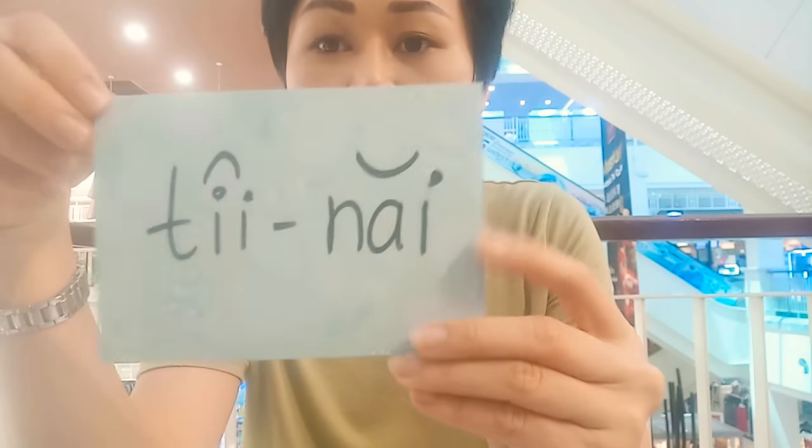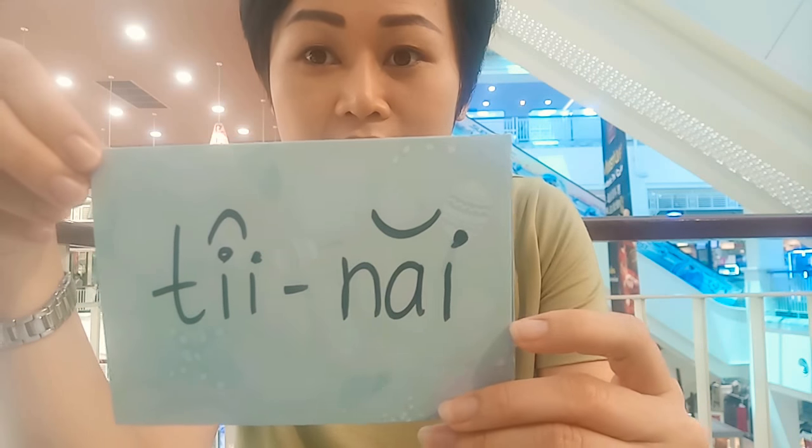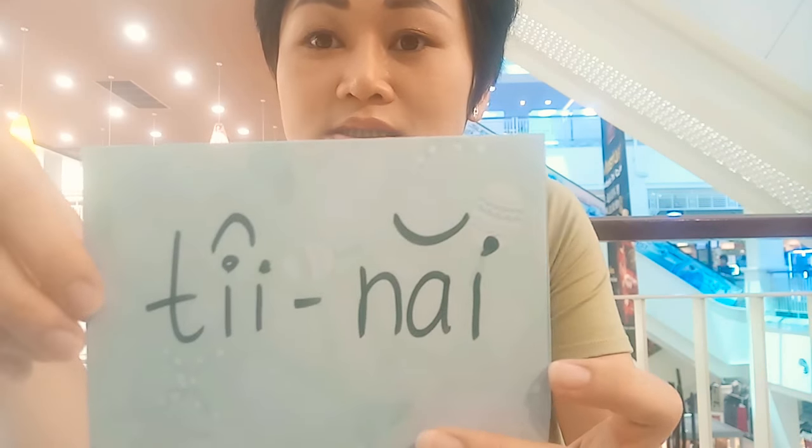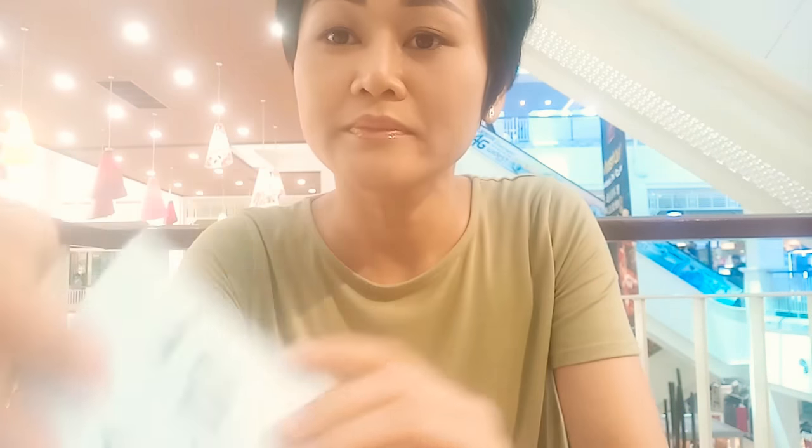The second question word is 'where.' The question word 'where' in Thai is 'tii-nai' — falling tone and rising tone. For example: 'Where are you?' — 'Yuu tii-nai?'